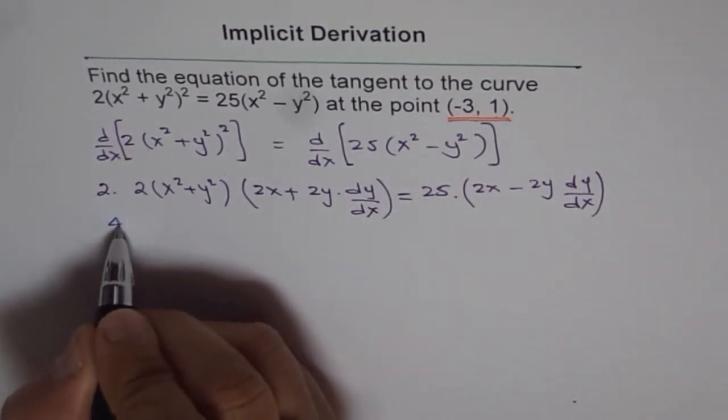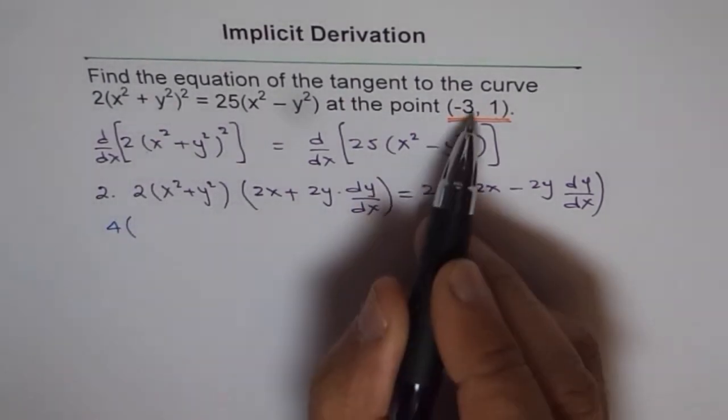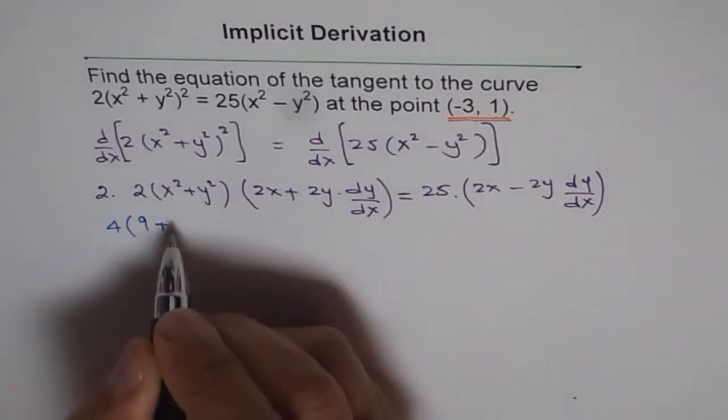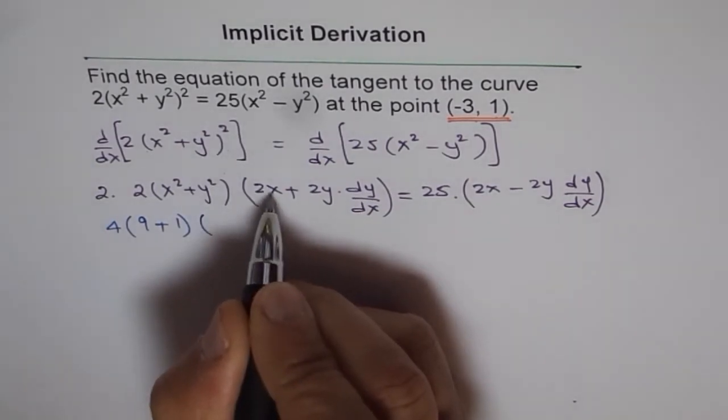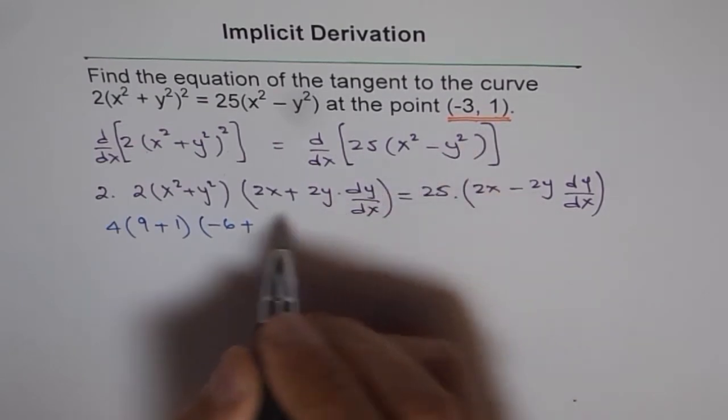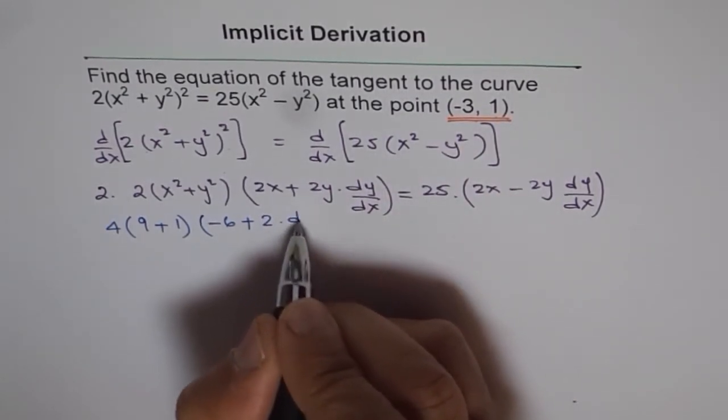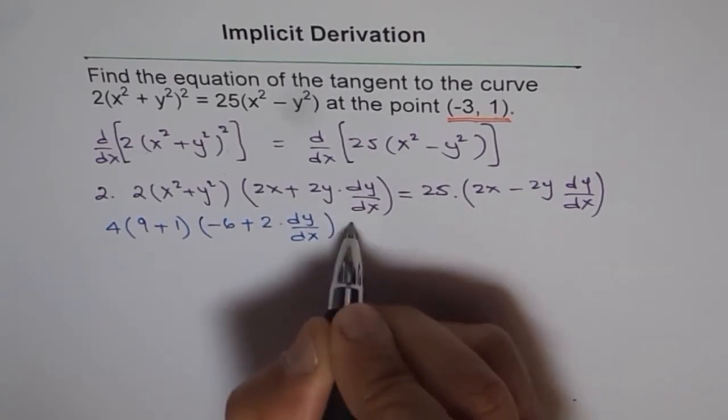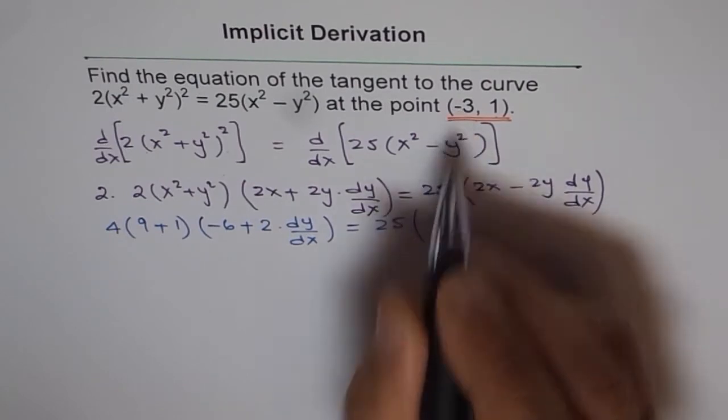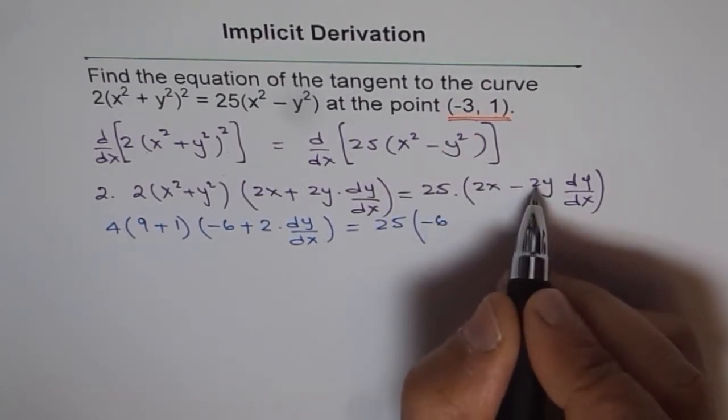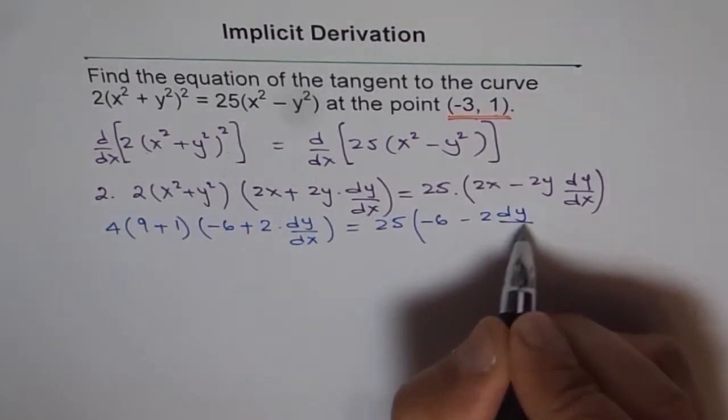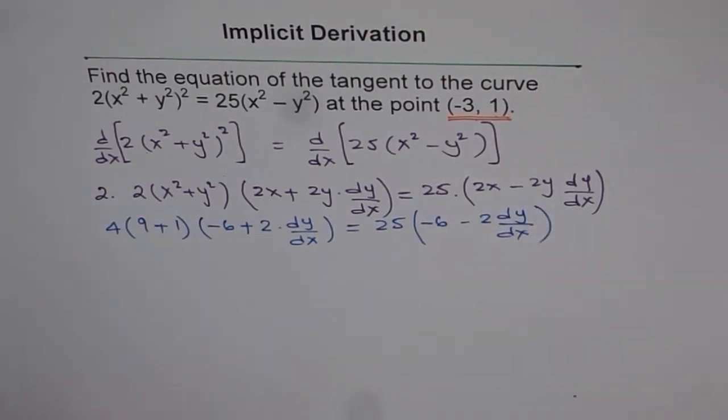So let's do this. 2 times 2 is 4. So we get 4 here. I'm substituting x as -3. (-3)² is 9 plus 1² is 1. And then 2(-3) is -6 plus 2y dy/dx equals to 25 times, within bracket, 2(-3) will give you -6, minus 2y, so minus 2(1) is -2 dy/dx.